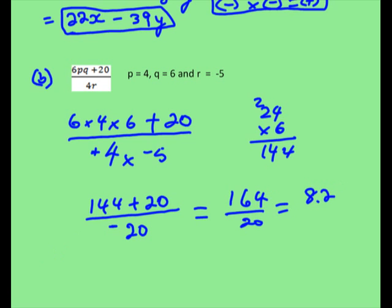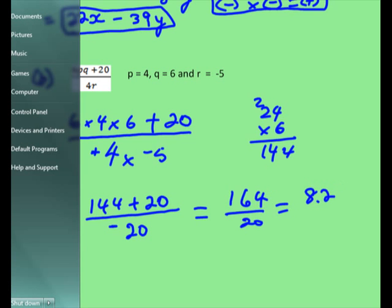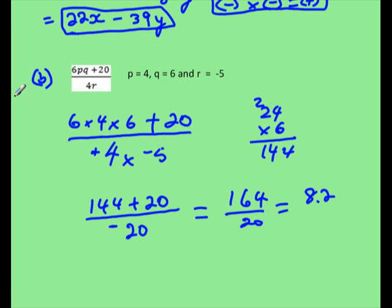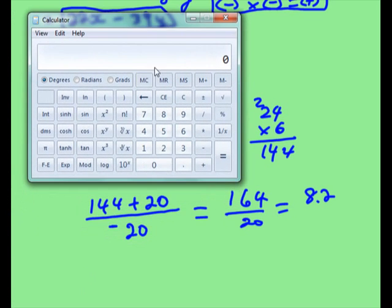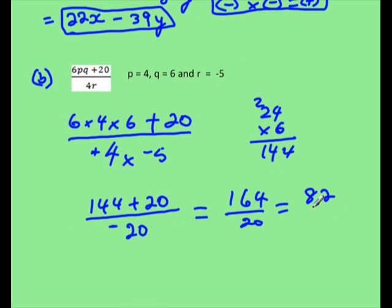Okay, we can always double check this. Let's get a calculator. So we're going to have 164 divided by 20, and that gives us 8.2. So that's our answer, 8.2.